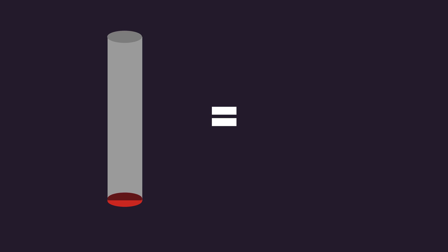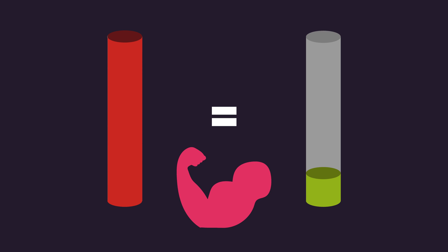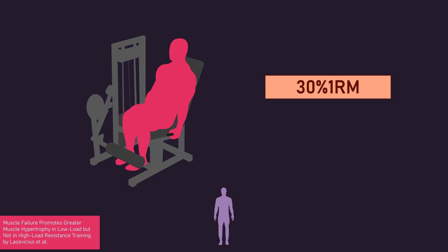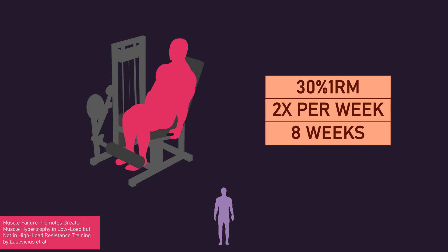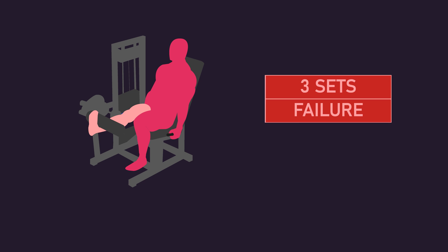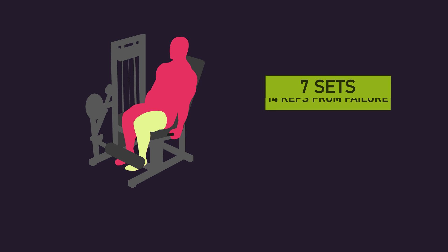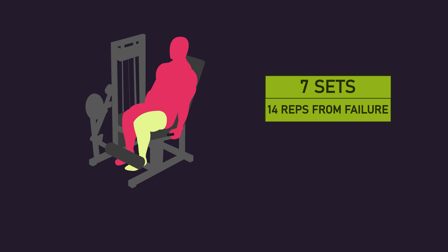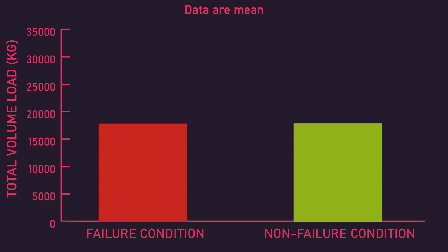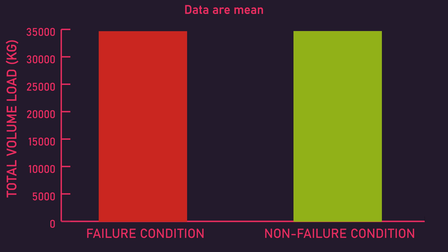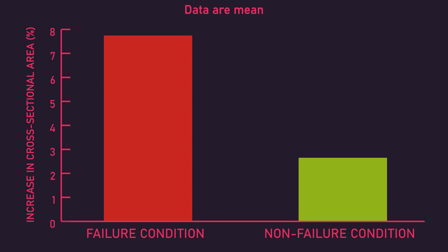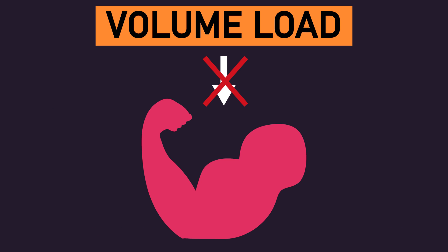As a final point, there's evidence that if you equate training volume load between a condition that trains to failure and one that trains very far from failure, muscle hypertrophy outcomes are dissimilar. Demonstrating this, a study by Las Vesias and colleagues had previously untrained men perform a unilateral leg extension with a 30% one-rep max load, twice per week for 8 weeks. Each session, subjects trained one leg with 3 sets of repetitions to failure (failure condition). With their other leg, they aimed to perform roughly 7 sets of repetitions that were roughly 14 repetitions away from failure (non-failure condition). By the end of the study, total training volume load was similar between both conditions. However, quadriceps growth was much greater for the failure condition, demonstrating volume load is not necessarily related to muscle hypertrophy.